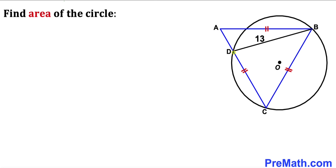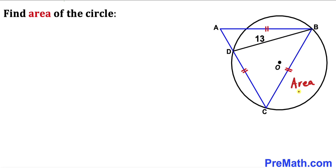Welcome to pre-math. In this video we have an equilateral triangle ABC whose two vertices B and C are on the circle with center O, such that chord BD is 13 units long. Our task is to calculate the area of this circle.